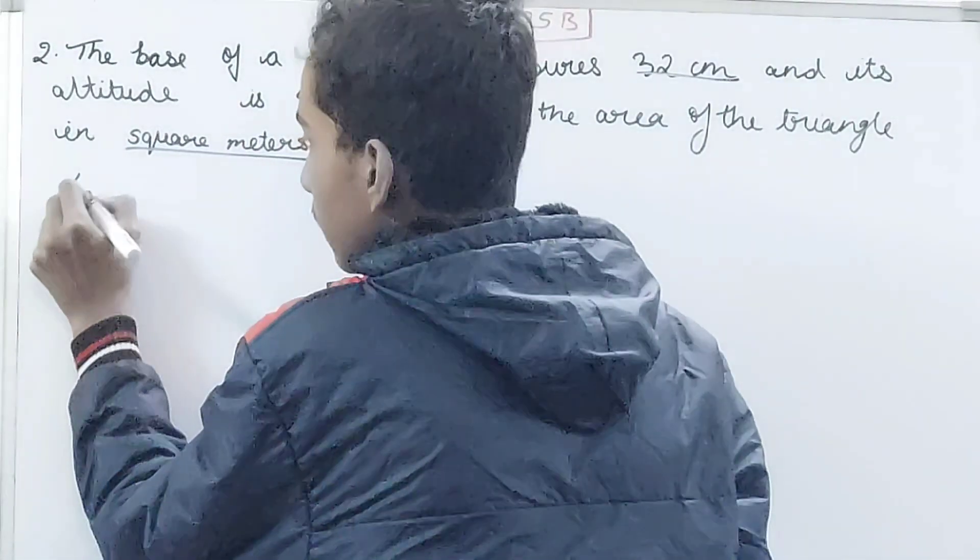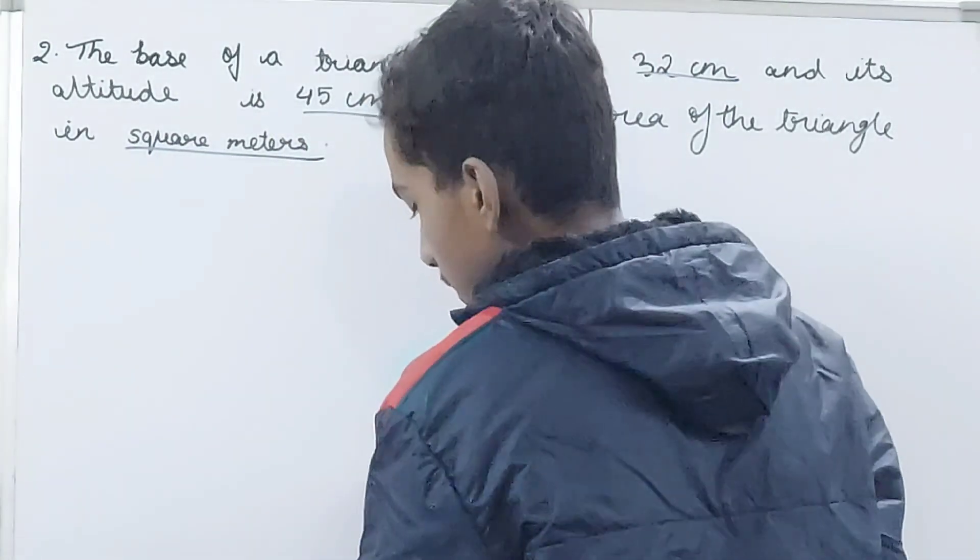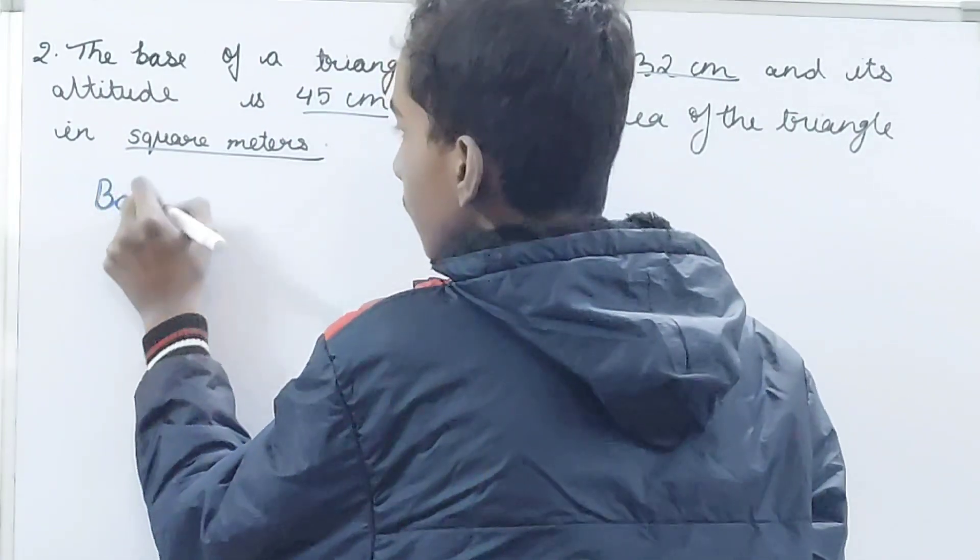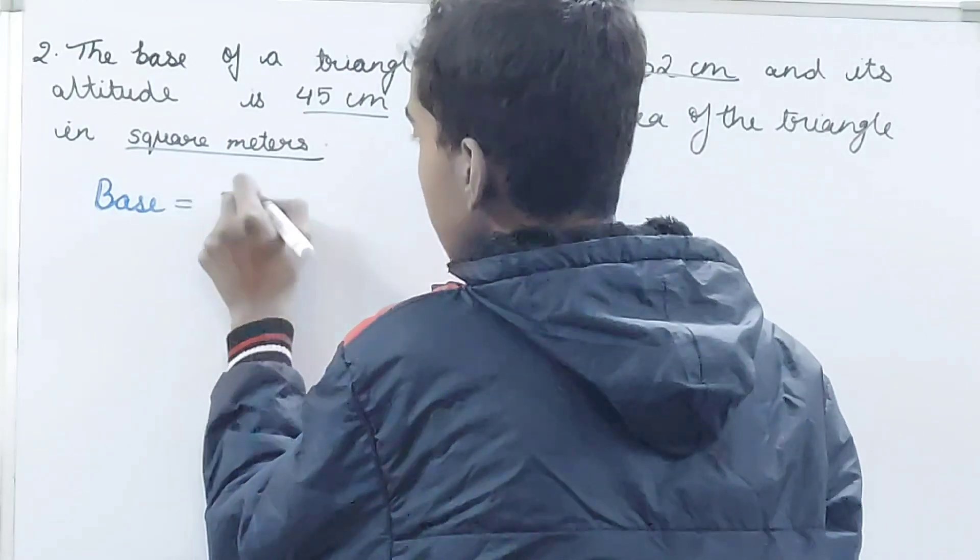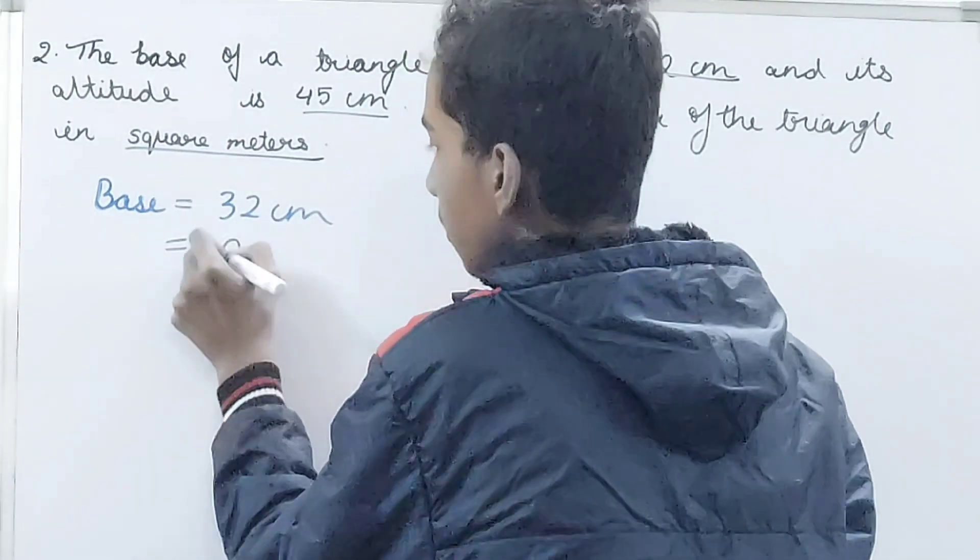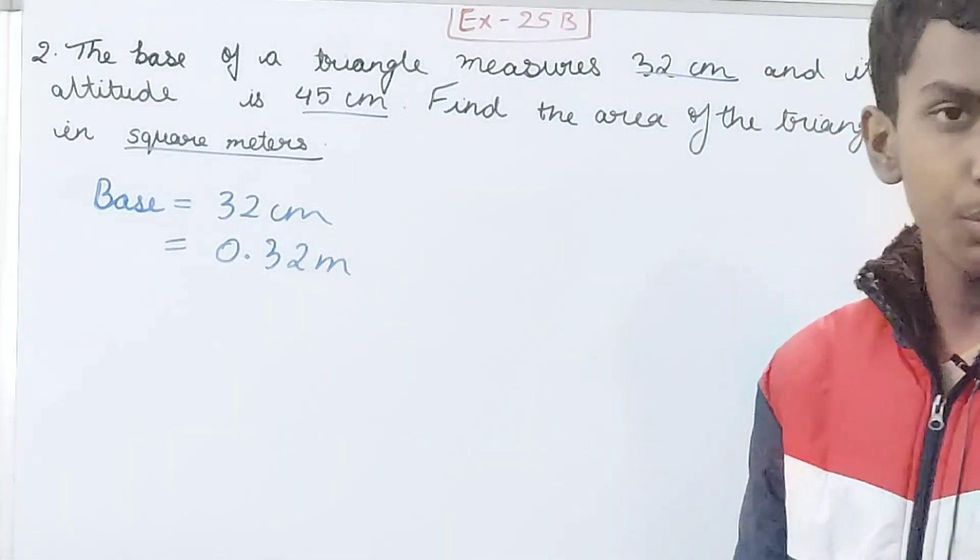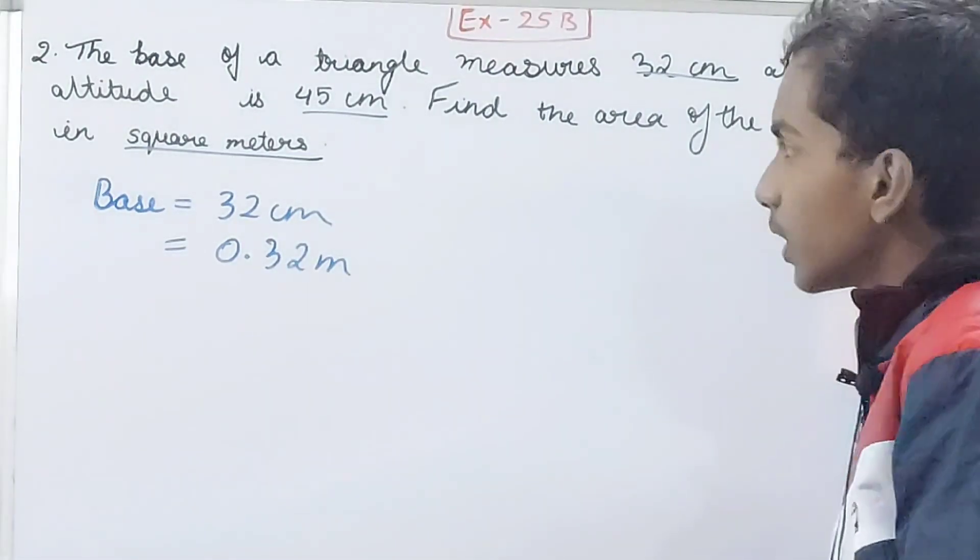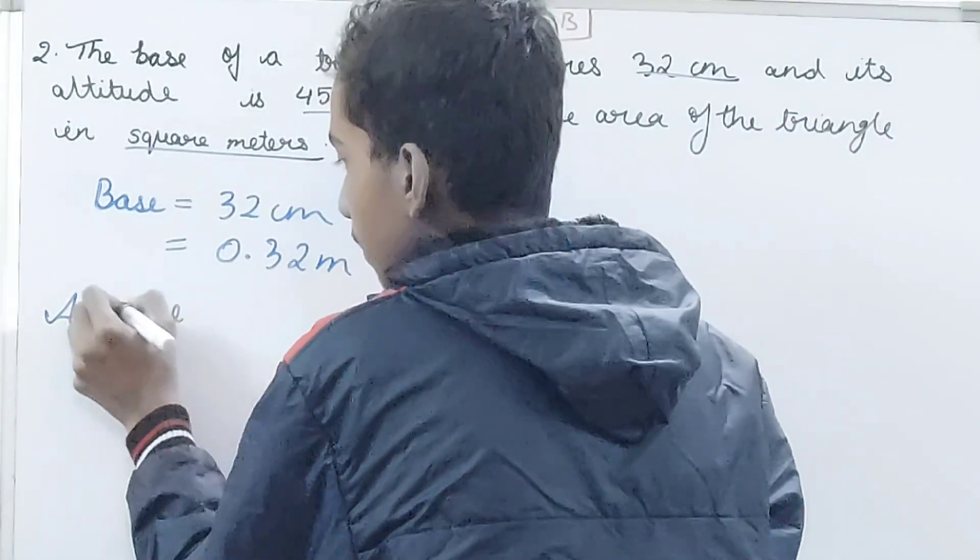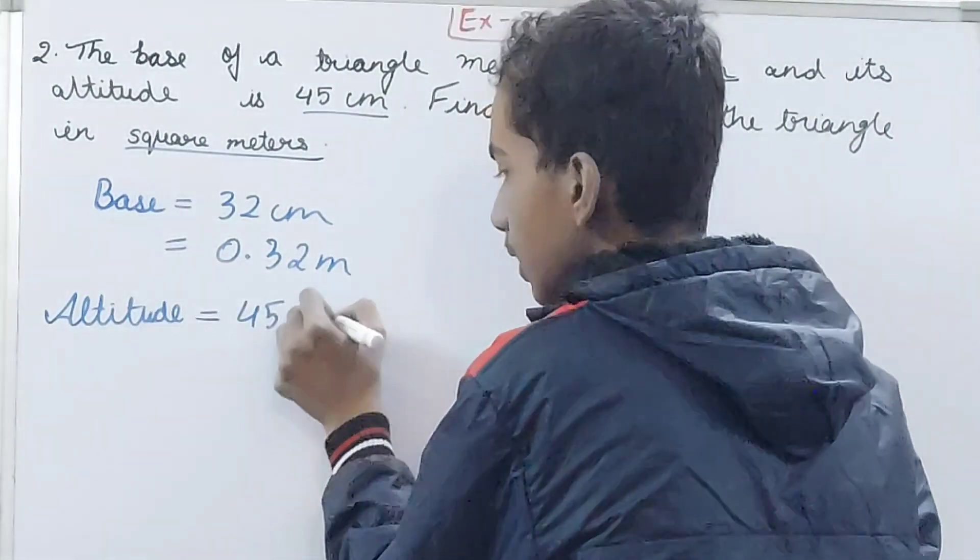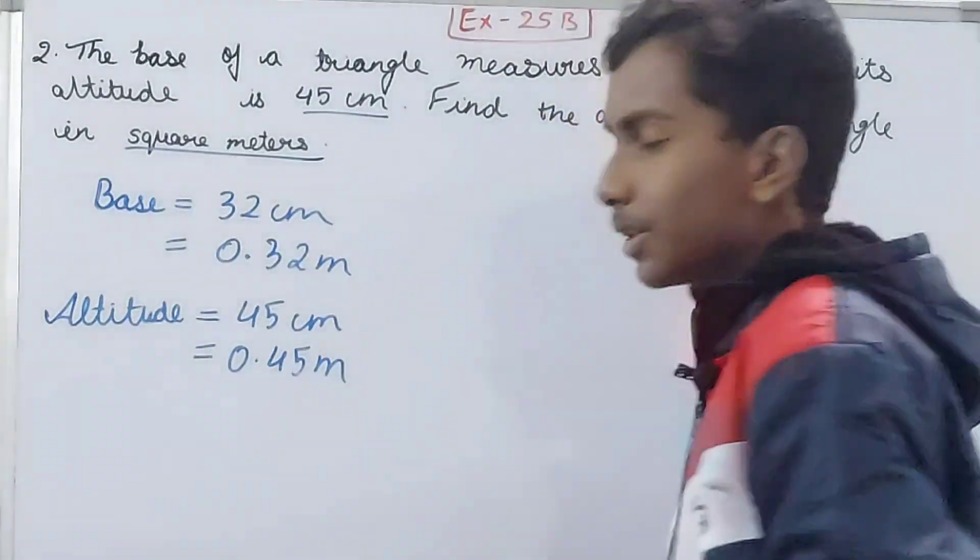So the base is 32 centimeters. This will become 0.32 meters, right? 1 meter is 100 centimeters, so 32 centimeters is 0.32 meters. And the altitude now—